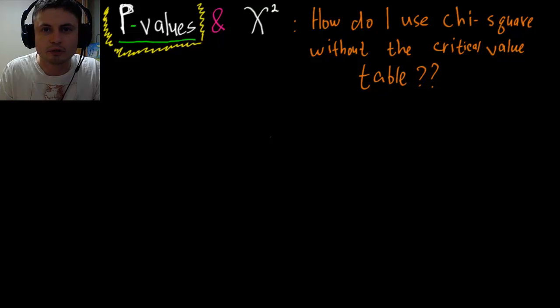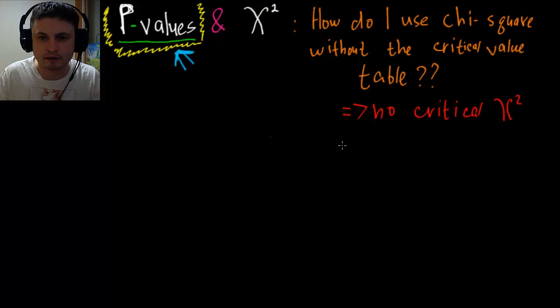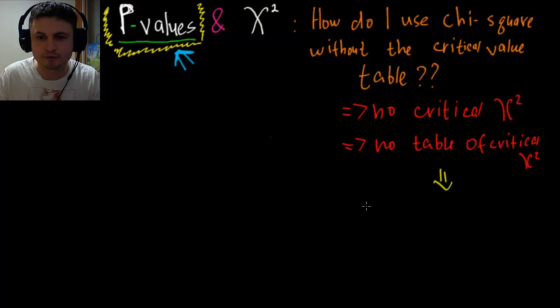Now on a test you're not going to have the table, you're only going to have the calculator. And this is where p-values come in really handy because they basically help us with all this. So in other words when you have no critical value of chi-square and when you also have no table for critical values, you then have to use the p-value.